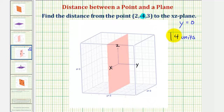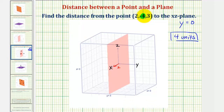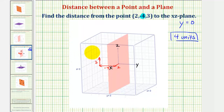To visualize this, let's go ahead and graph this point in space. Because the x coordinate is positive two, we'd move two units in this direction. Then because the y coordinate is negative four, we move in the direction of the negative y axis four units, which would be in this direction here. And then because the z coordinate is positive three, we'd move up three units. So this would be the point in space.